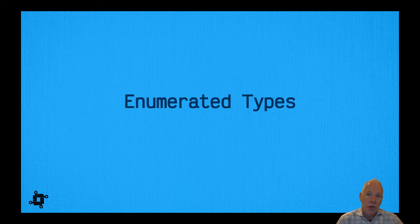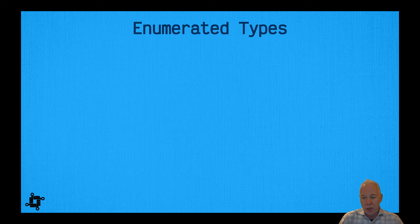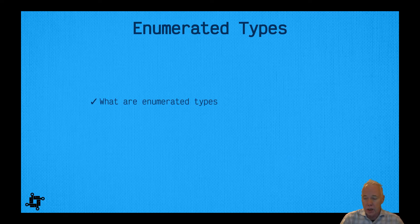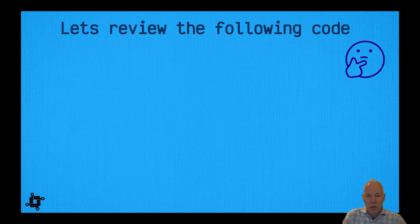So far we've covered a couple basic types like ints, strings, bools, and so forth. In this module I want to introduce a new type called an enumerated type. We'll look at what enumerated types are, how to declare them, how we can use them in our code, and when is the proper time to use them.